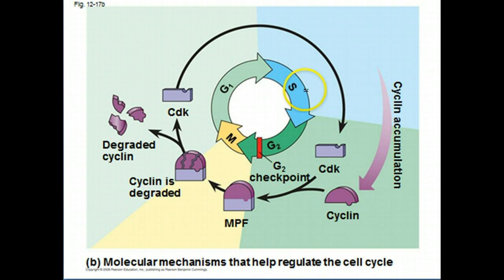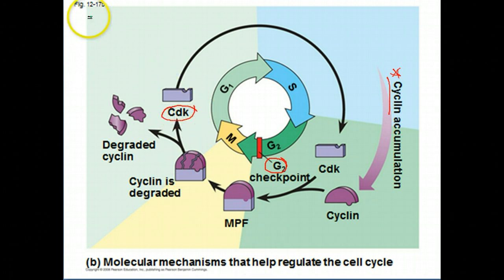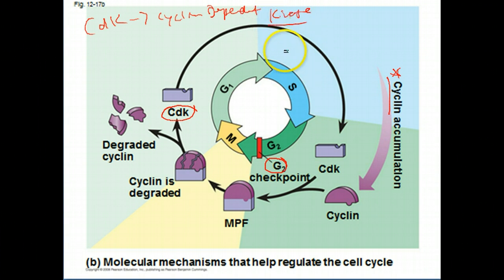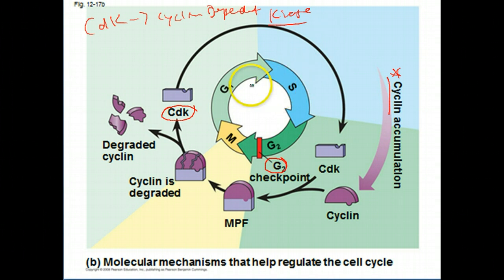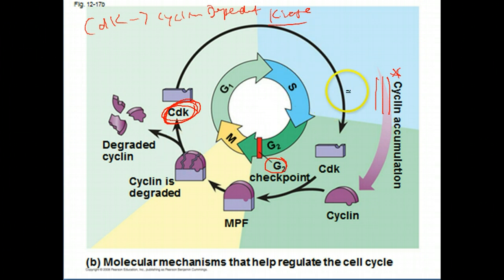Another example occurs at the G2 checkpoint. This G2 checkpoint involves things called cyclins and CDKs — cyclin-dependent kinases. Although we haven't talked about kinases yet, they're proteins that basically participate in the phosphorylation of other proteins. Phosphorylation events are critical in biochemical signaling pathways, so you're going to see a lot of kinases. The cyclin-dependent kinase gives a clue as to its function — it's a kinase that phosphorylates things, but it's also dependent on cyclins. Normally in the cell, you do not have cyclins. Cyclins are proteins that basically cycle — their presence or absence accumulates and breaks down depending on what part of the cell cycle you're in.